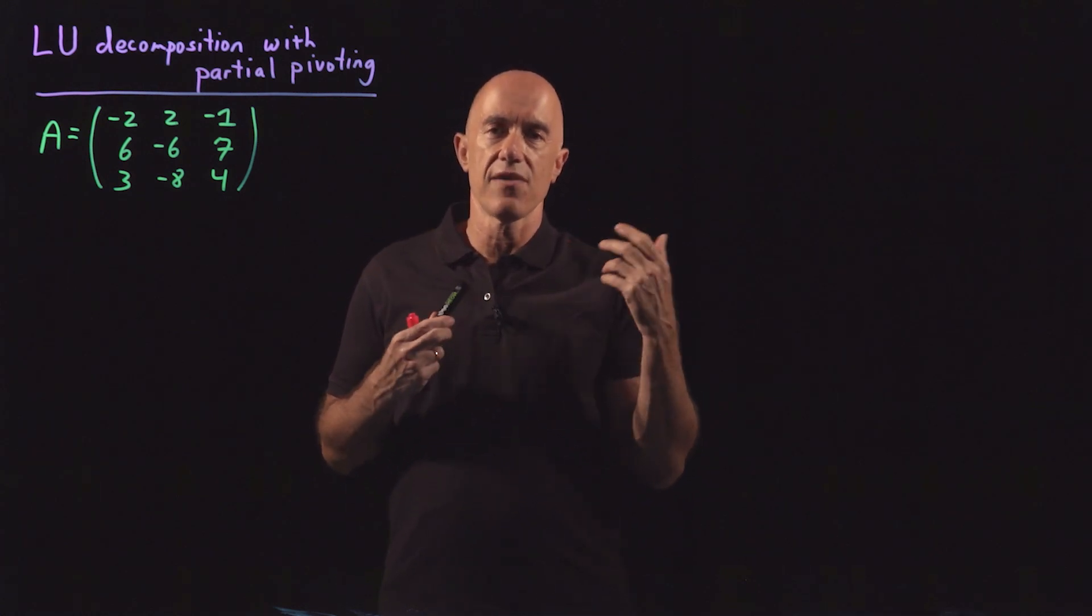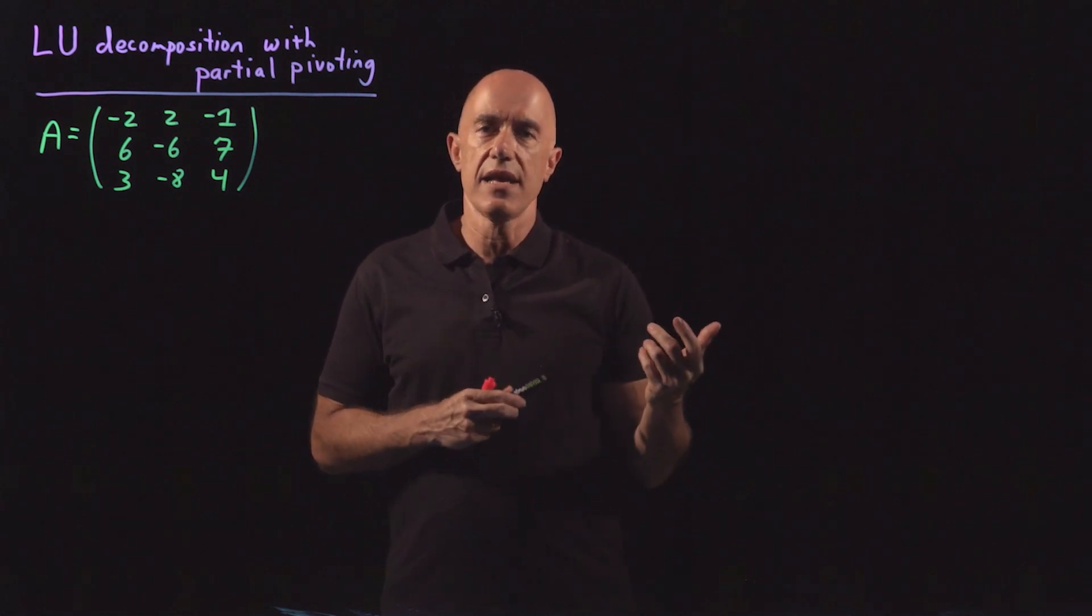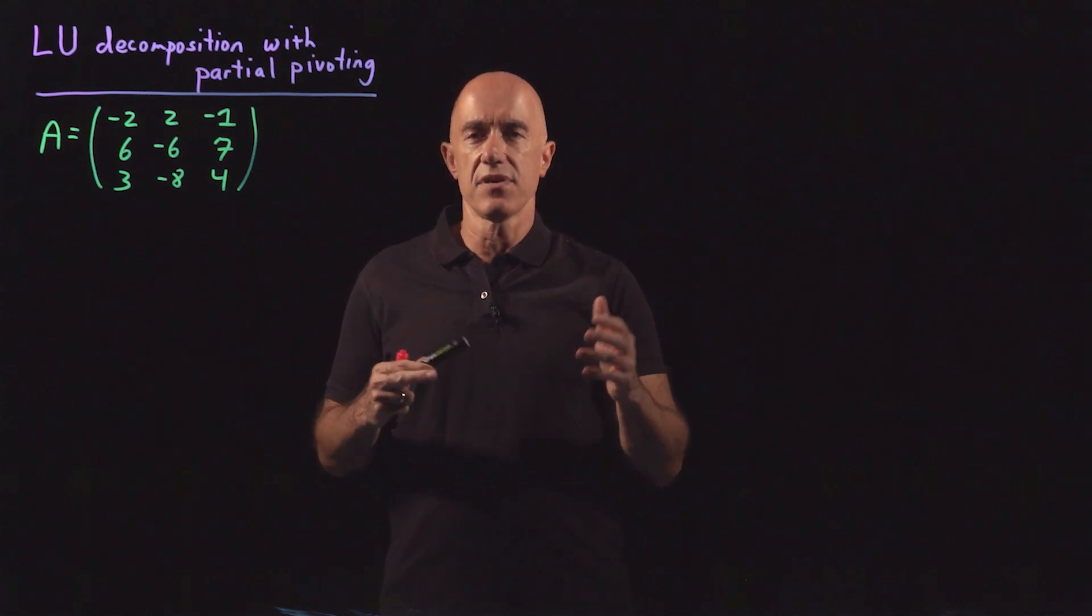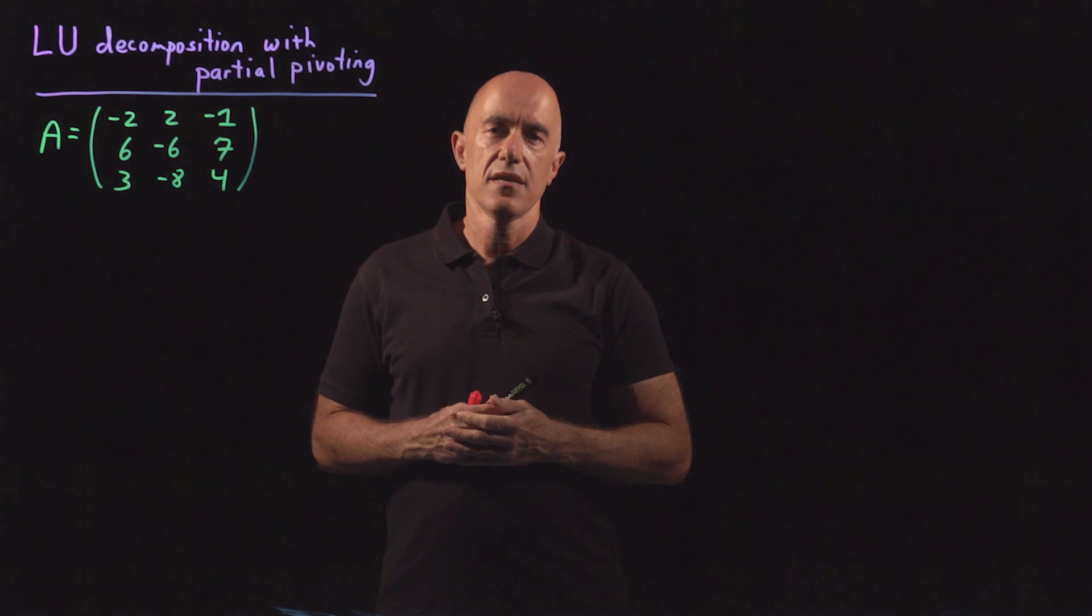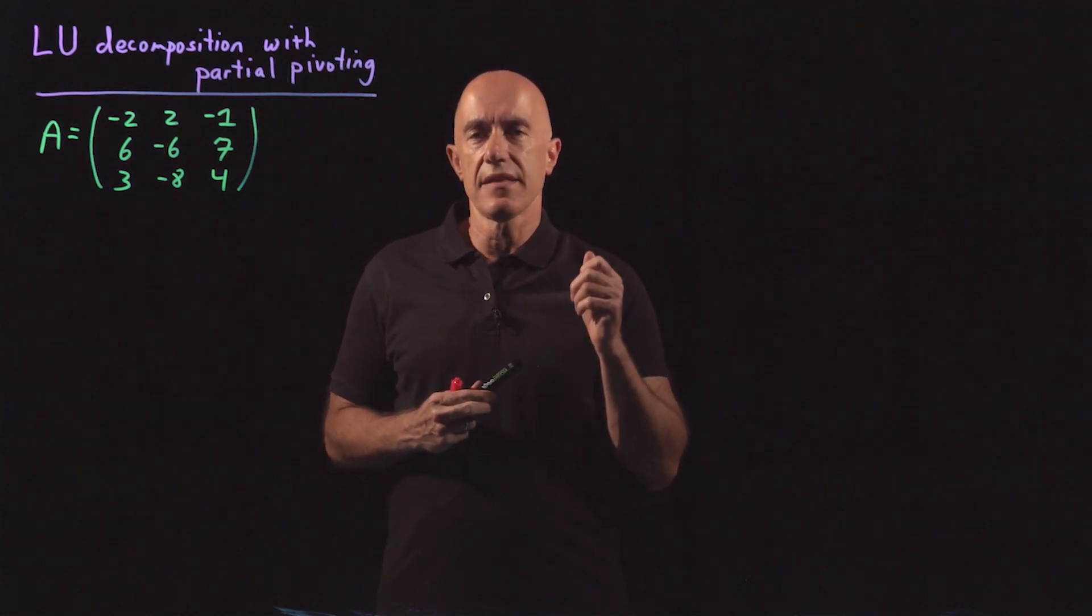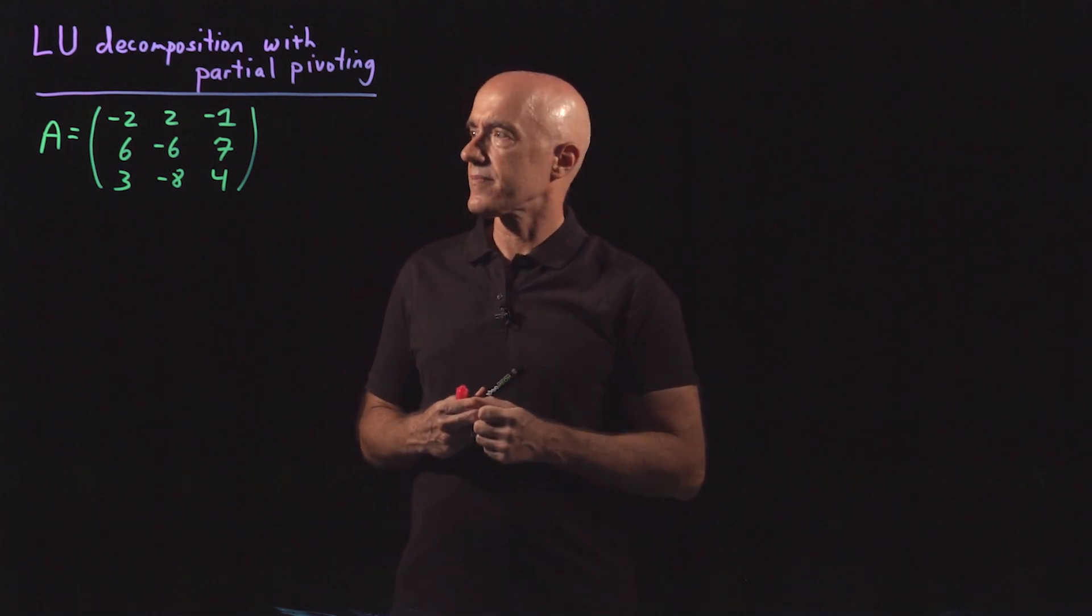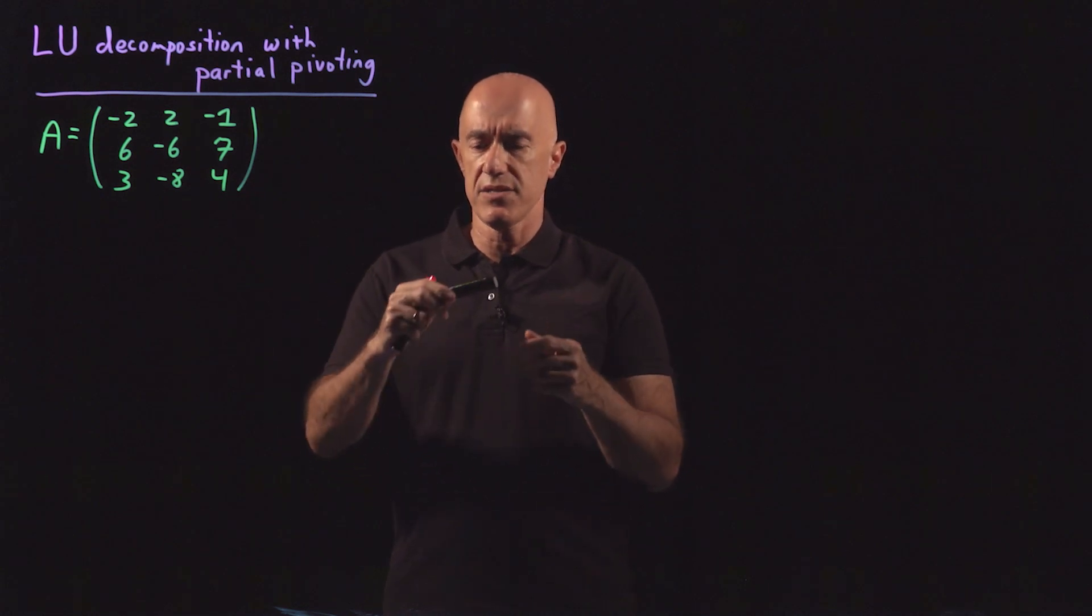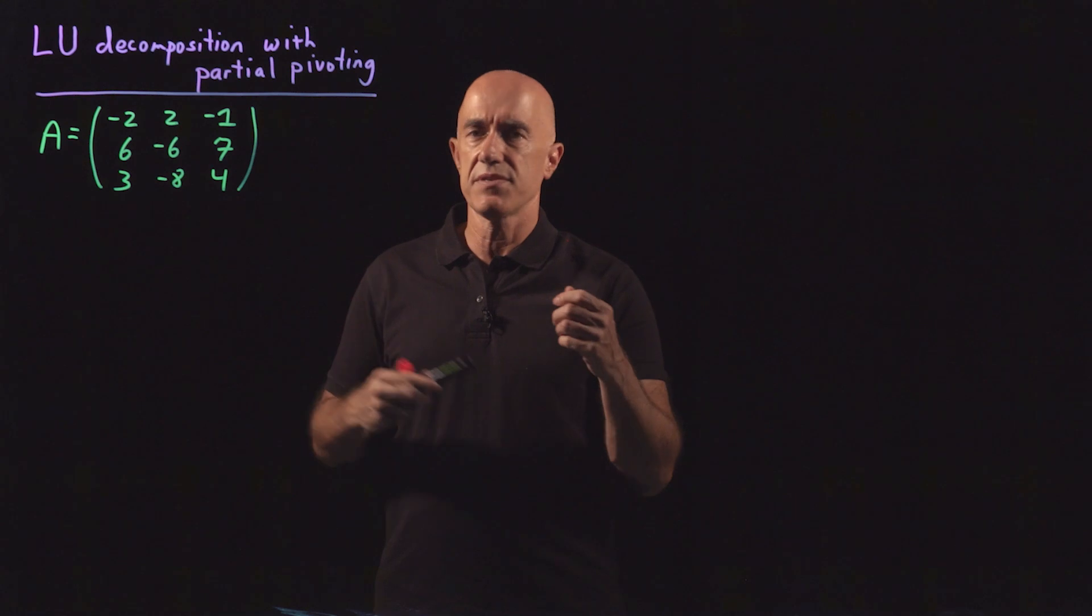If you only needed to solve one system of equations with one right-hand side, then it doesn't really make much difference. But if you have the same matrix but you keep changing your right-hand side, like say you're evolving a partial differential equation, then LU decomposition can really speed up your code. So let's see how this method of partial pivoting applies to finding the LU decomposition of this matrix A.